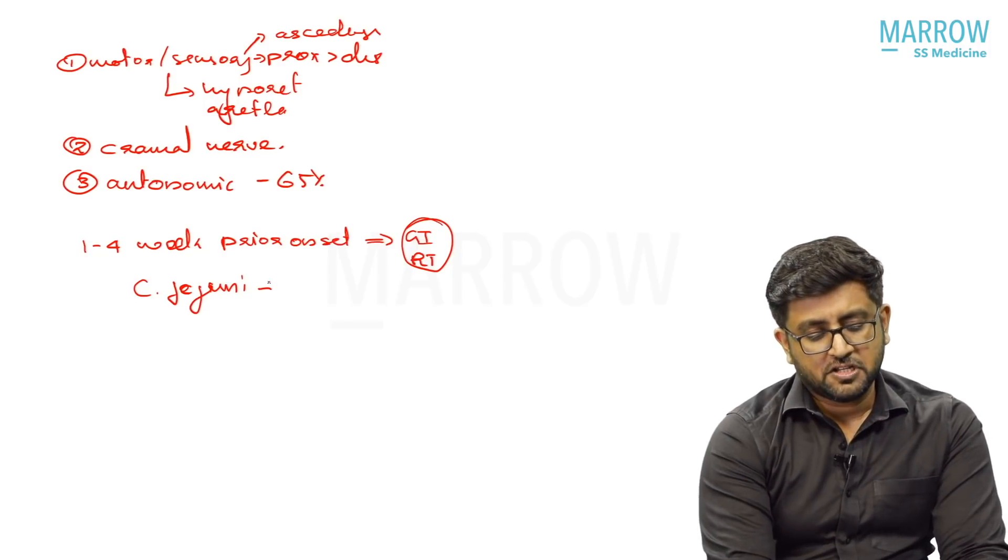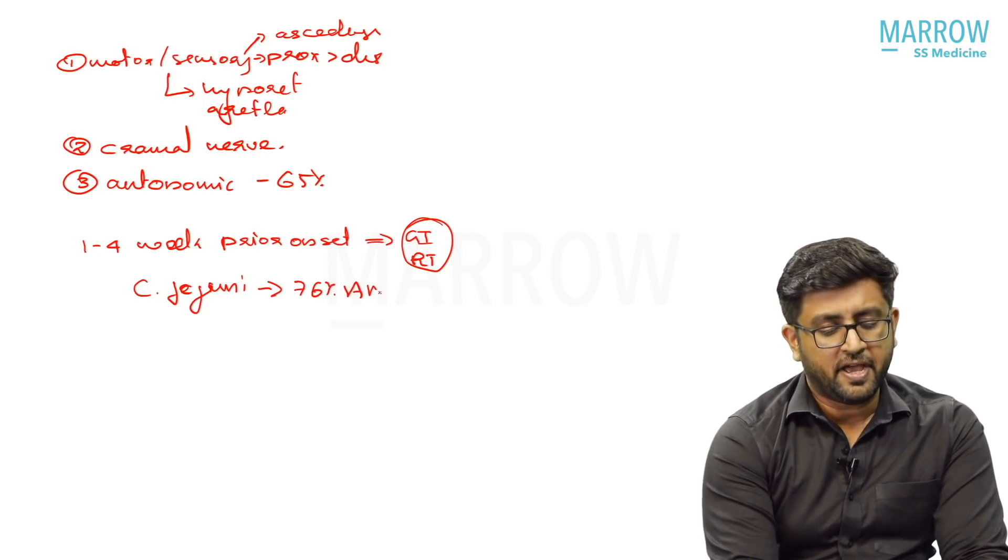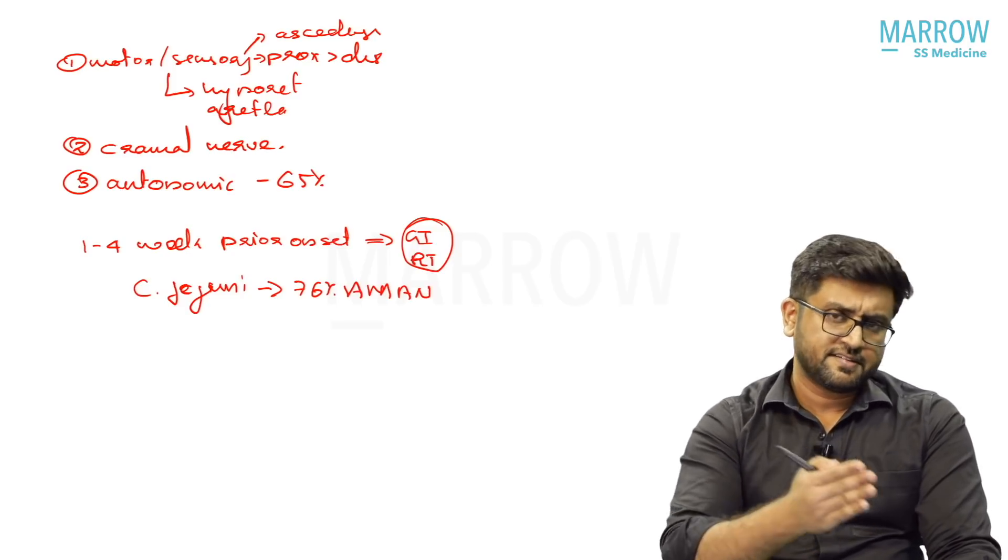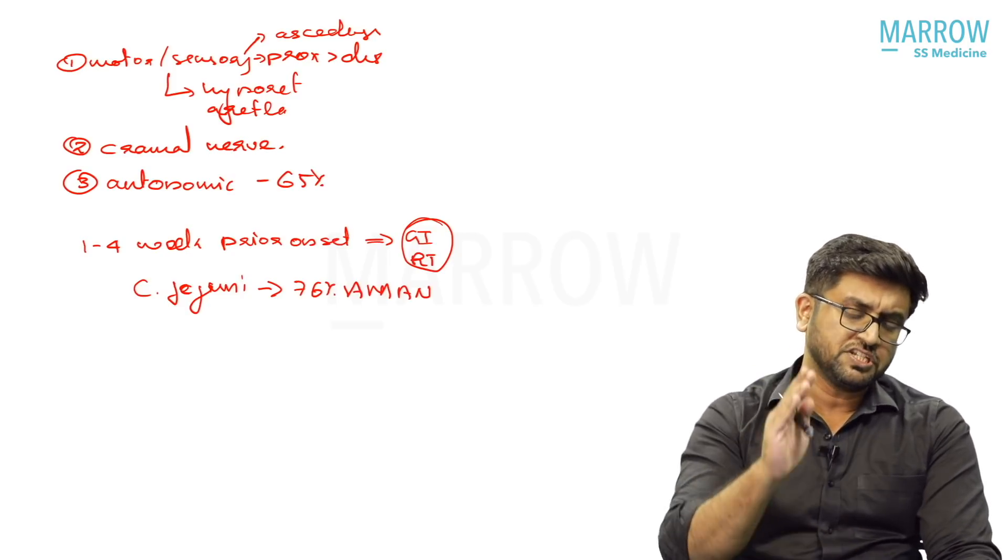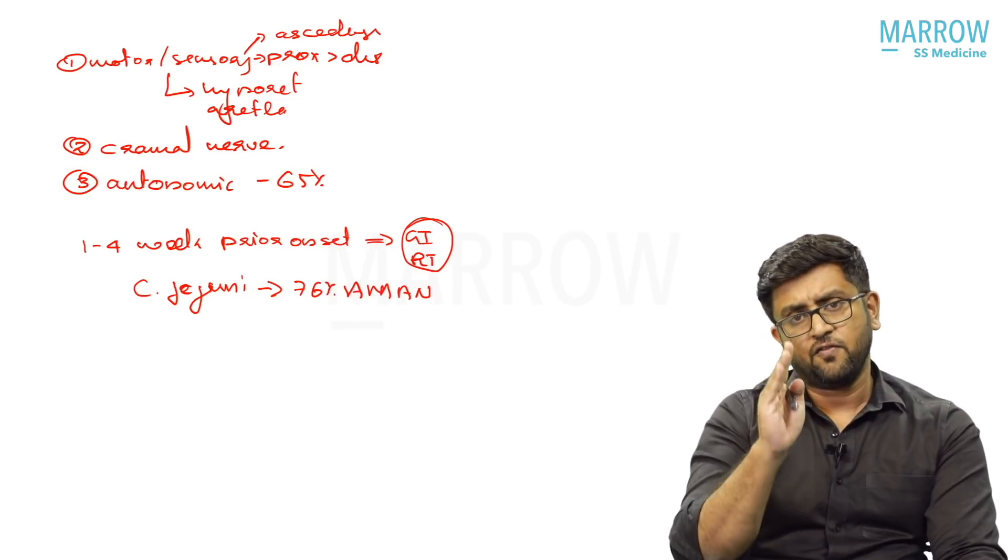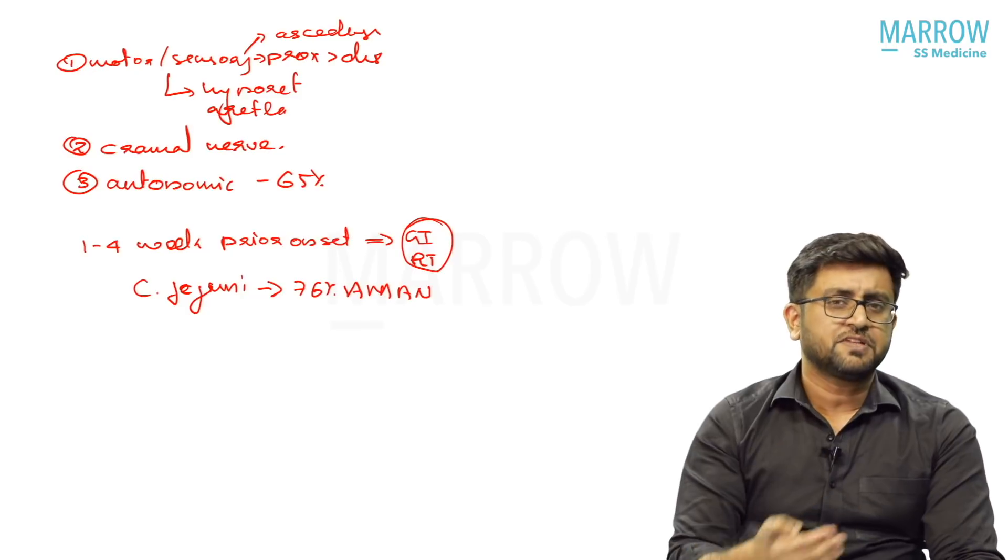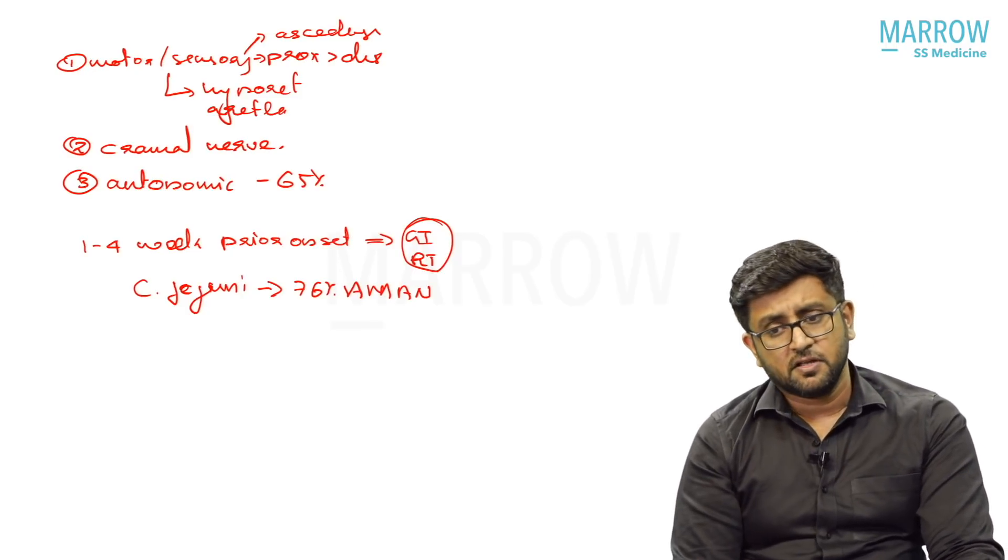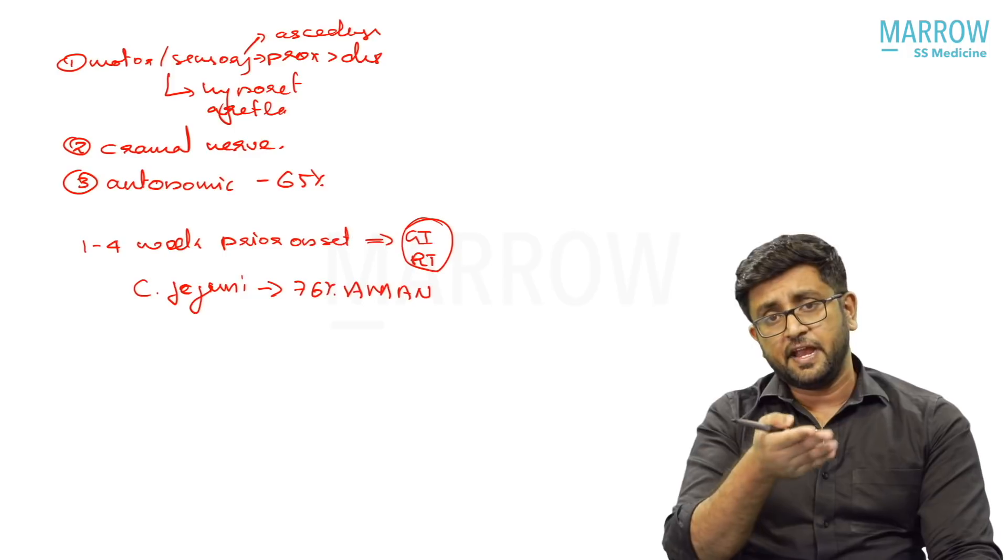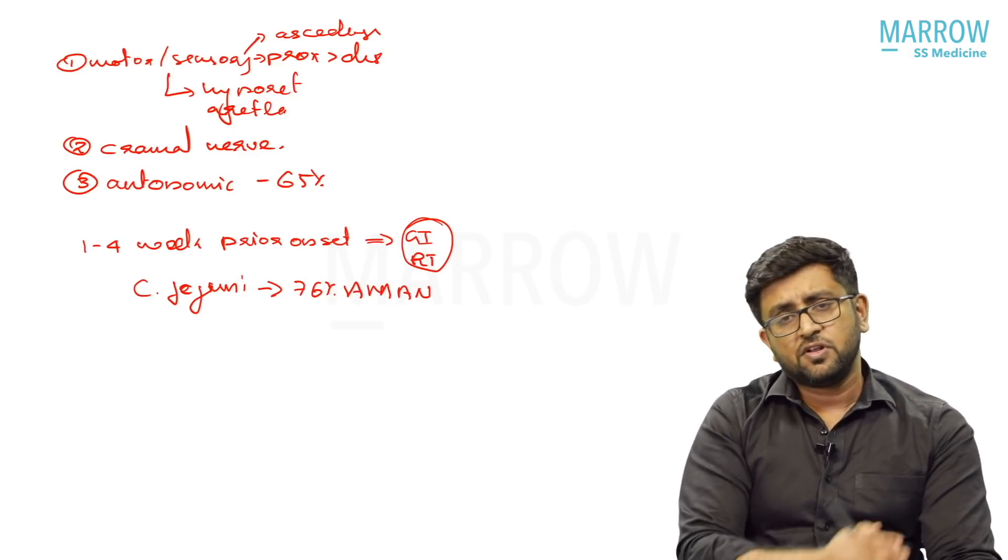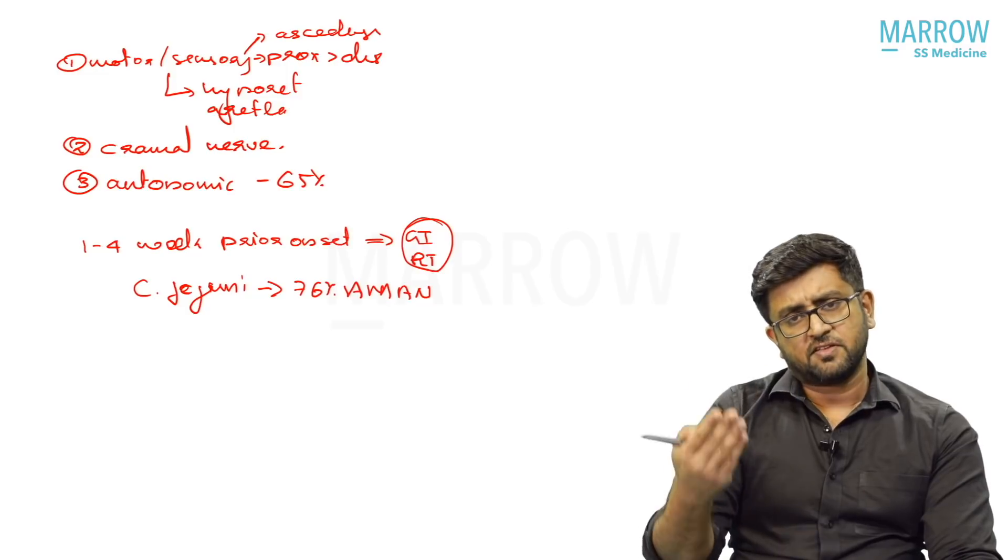The most common organism is Campylobacter jejuni, which is associated with around 76% of AMAN variant. GBS has different variants - AMAN, AMSAN, and different. We will discuss those different variants. Campylobacter jejuni is the most common organism, and 76% AMAN is caused by Campylobacter jejuni. Other organisms like Mycoplasma can present. HIV can present - HIV particularly can present with AIDP or CIDP-like presentation. CMV can present. All these can present.